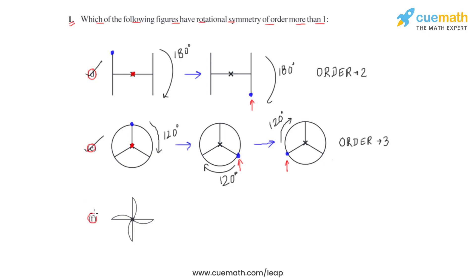In the last figure, figure F, we have a windmill which may not appear symmetrical. Rotating it about the fixed point or center of rotation, and tracking the blue dot, we test a 90-degree clockwise rotation. After 90 degrees, the blue dot moves to a new position and the resulting figure is exactly the same as the question figure.